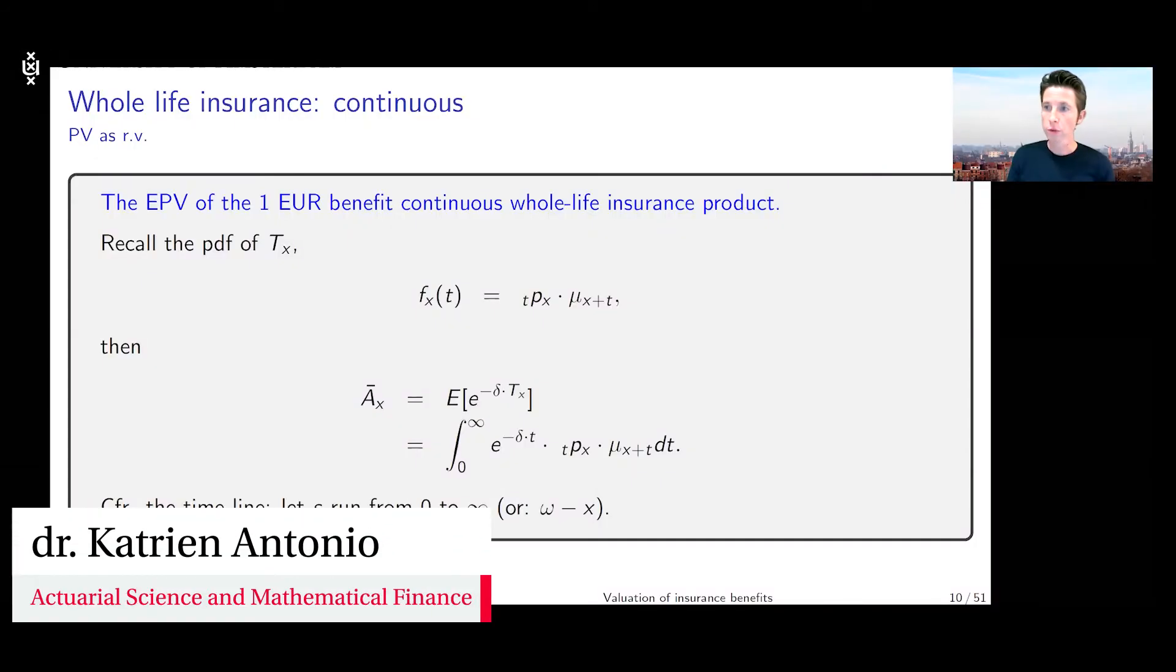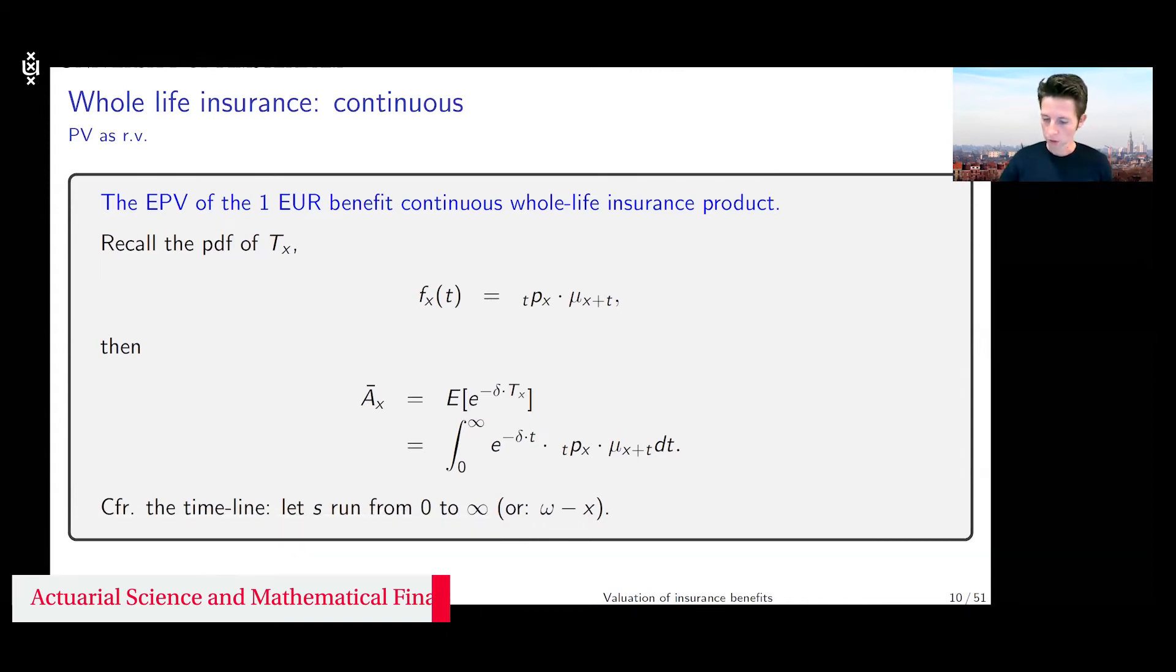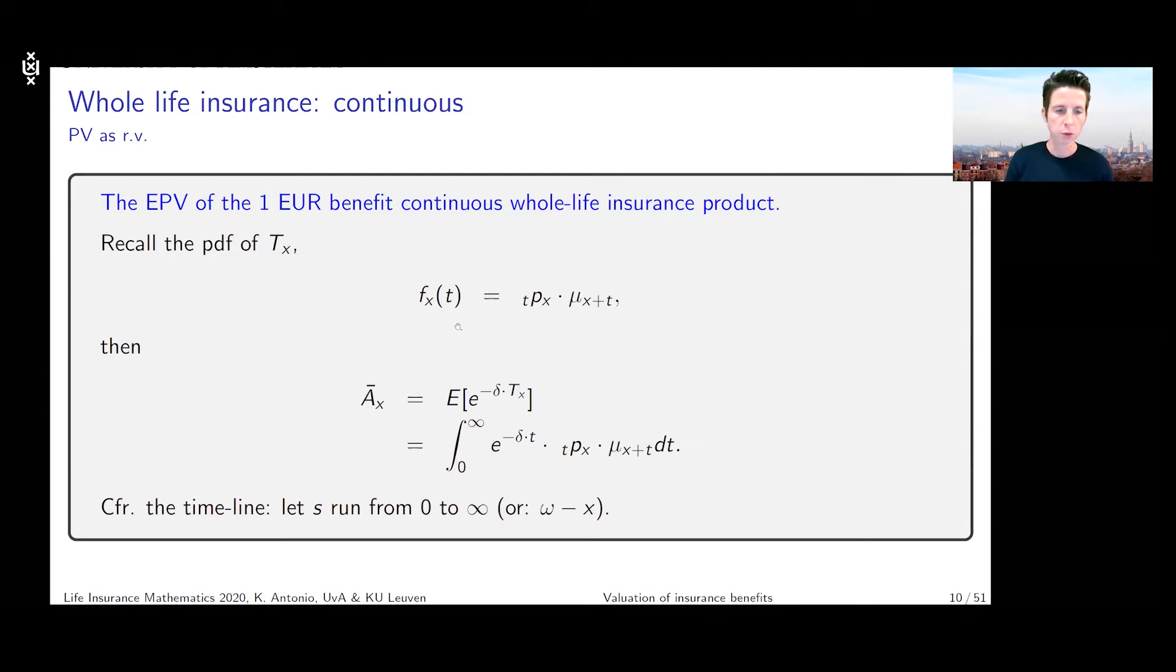This is what we covered before the break. This is the essential formula we discussed. We're looking at a one euro benefit life insurance product. It's whole life insurance, so there is no limit in the duration of the insurance cover. We sell it to an x-year-old and we want to know what's the expected present value of this insurance product. Why do we want to know this? Because this will be the technical basis for the premium.